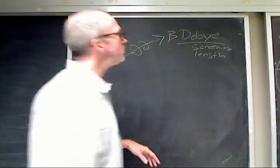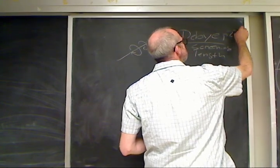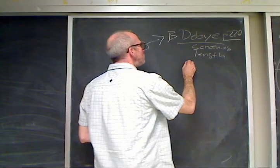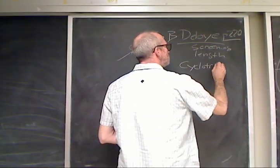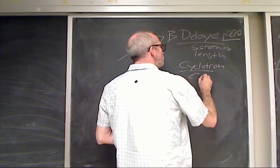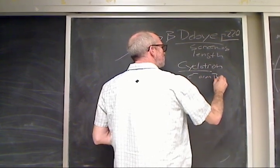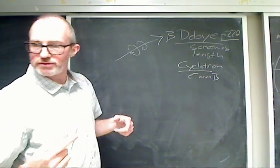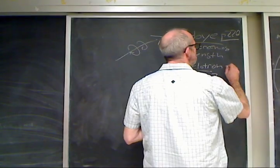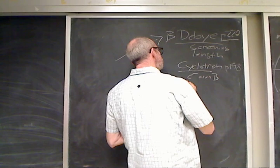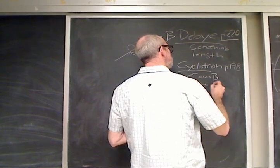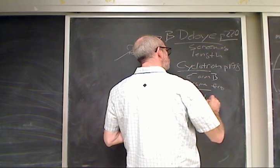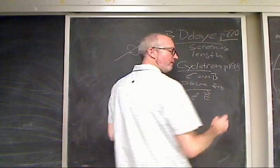The Debye length is the screening length, and that's on page 220. The cyclotron frequency — electrons around magnetic fields, electrons circulating around a magnetic field — that's on page 198. The plasma frequency is electrons cycling around electric fields, and that derivation is on page 240.